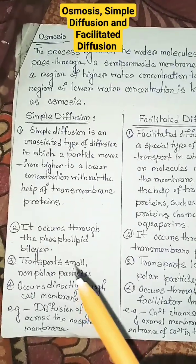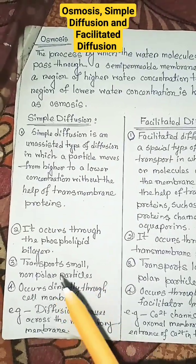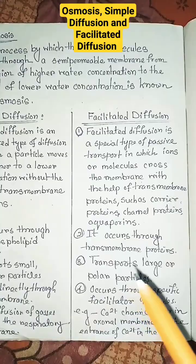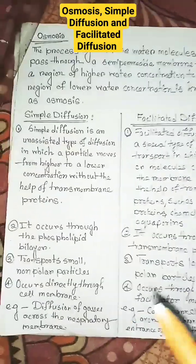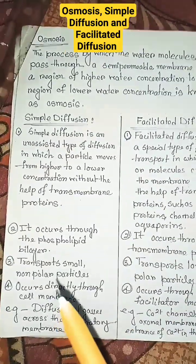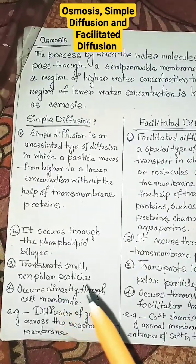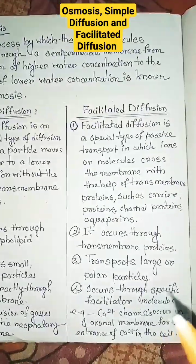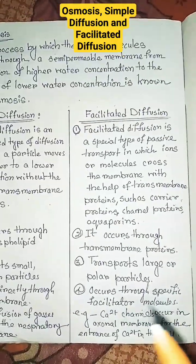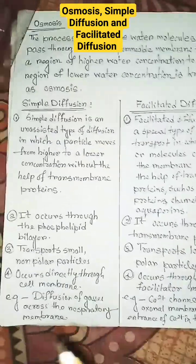Simple diffusion transports small nonpolar particles, but facilitated diffusion transports large or polar particles. Simple diffusion occurs directly through the cell membrane, whereas facilitated diffusion occurs through specific facilitator molecules.